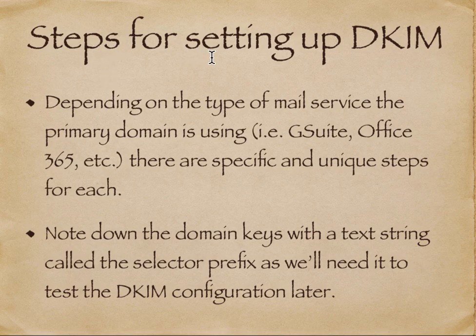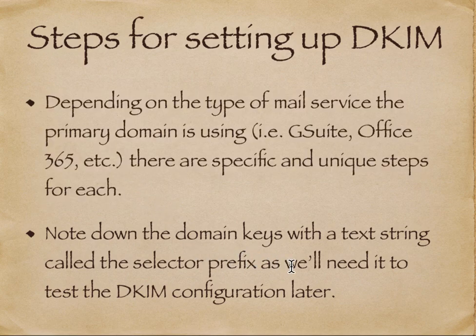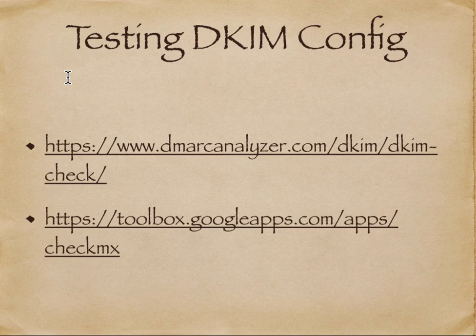Setting up DKIM involves specific steps depending on whether you are using G Suite or Office 365. While creating the domain key, a text string called a selector prefix is generated, which is required in the DKIM configuration. The configuration steps differ per service provider but the end concept is the same. After creation, you can test your DKIM configuration by visiting the provided verification links.